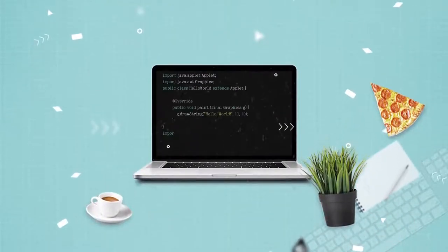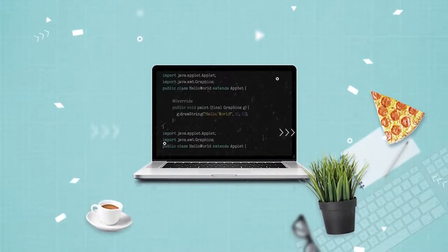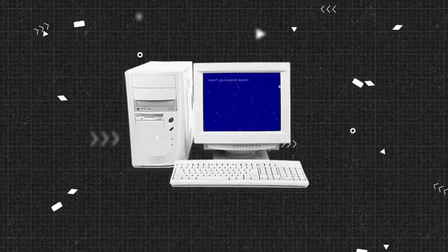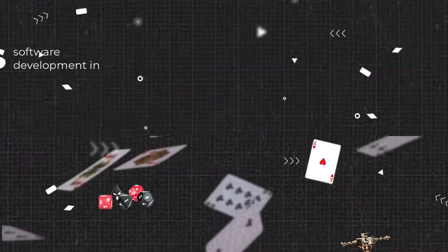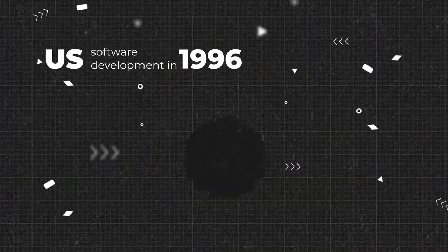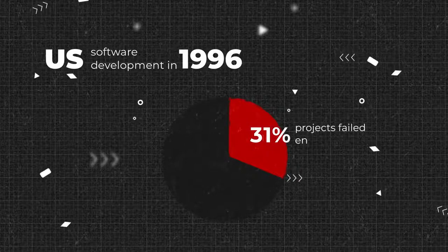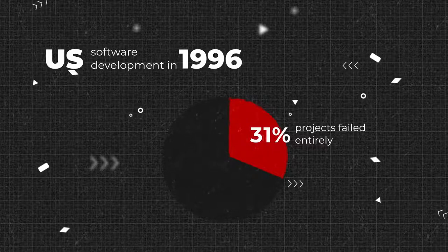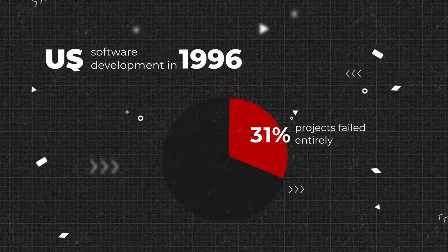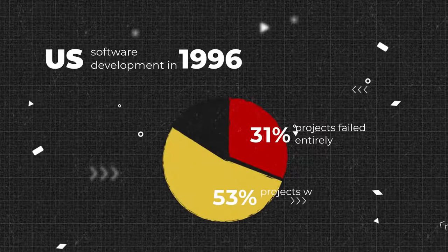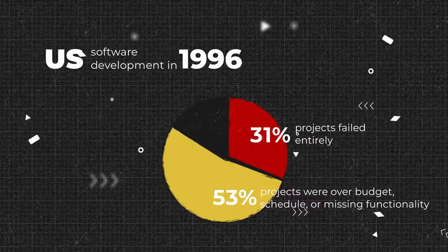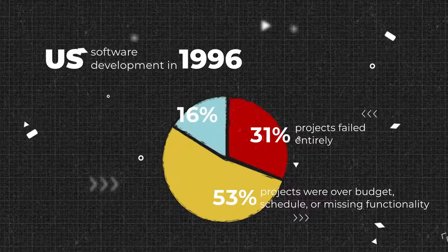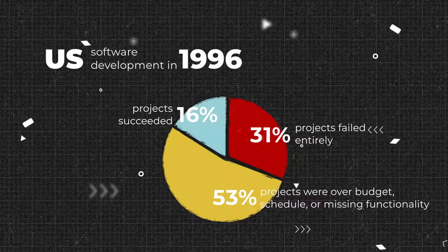Software development is risky, but 25 years ago, building a program was like gambling at a casino. In 1996, 31% of US development projects failed entirely, 53% were over budget, schedule, or missing functionality, and only 16% met initial expectations.